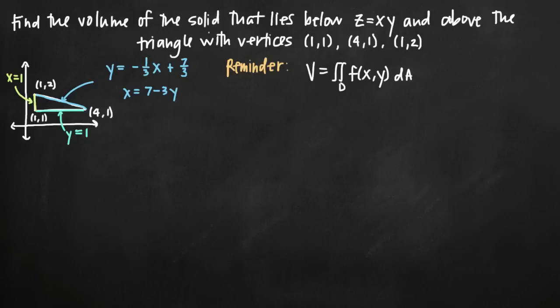Today we're going to be talking about how to find the volume of the solid that lies below the plane z equals xy, but above the triangle that's defined by the vertices (1,1), (4,1), and (1,2).